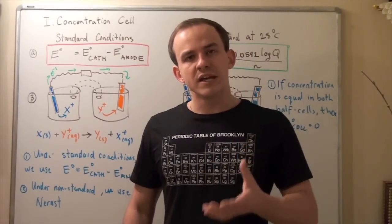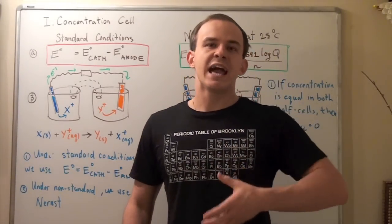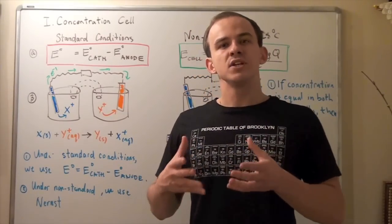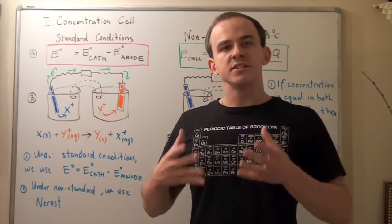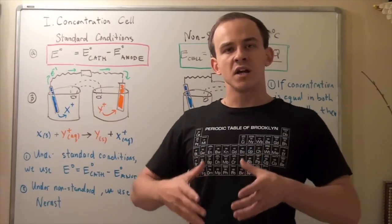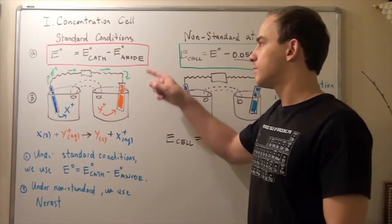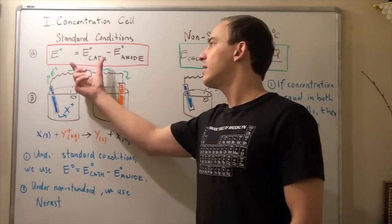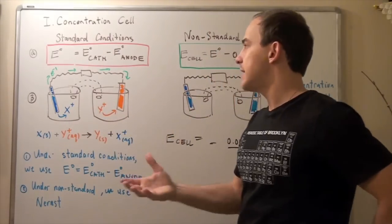The electrochemical cells we have discussed so far have different reactions proceeding in an anode and a cathode. This difference in reactions creates something called an electric potential, also known as a cell voltage. Under standard conditions of one bar pressure and one molar concentration, we can find our cell voltage using this formula, where we first find the cell voltage of the anode and subtract it from the cathode. These values can be looked up on a reduction half-reaction table.